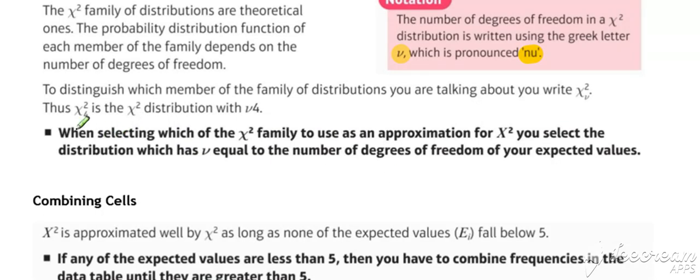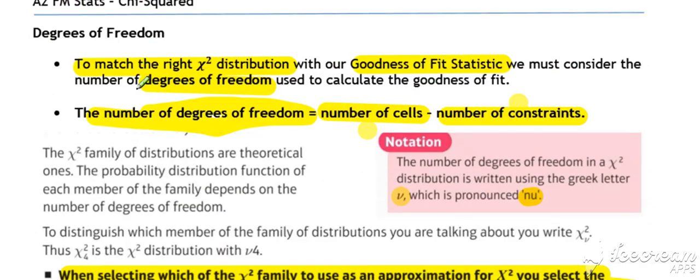So to match up the right chi-square distribution with the correct goodness of fit calculation, we need to make sure that we use the chi-square distribution with the same number of degrees of freedom as defined above. So number of degrees of freedom, number of cells minus number of constraints...